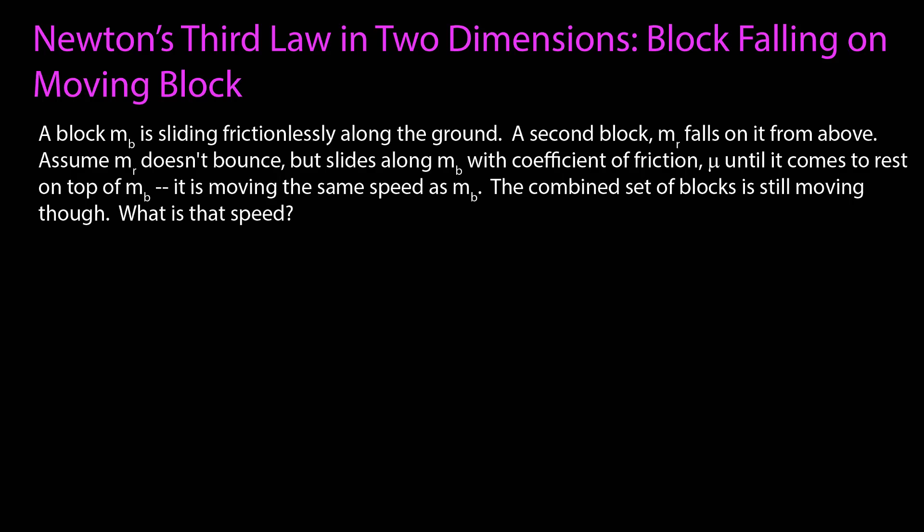In this video, I want to look at an example that uses Newton's third law to solve a problem in two dimensions. I have a block, which I will call blue, with mass m sub b, that is sliding frictionlessly along the ground with a speed of v sub i. There's a second block, which I will call red, which falls on it from above.